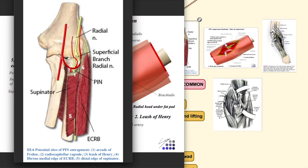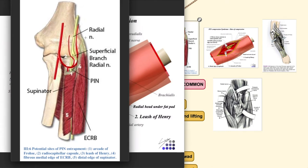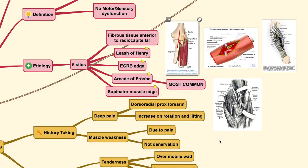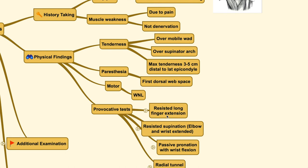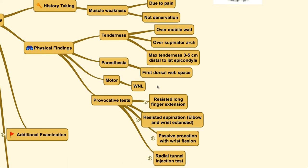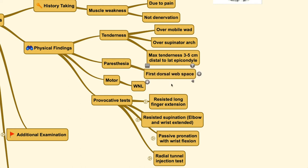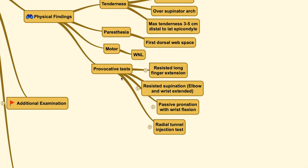This is the lateral epicondyle, and 3 to 5 cm from it, this area here will be known as the radial tunnel. In patients with suspected radial tunnel syndrome, you can elicit tenderness when you press around this area. The motoric function should be within normal limits. Paresthesia is only rarely found, and even if there is paresthesia, you will most likely find it in the first dorsal web space, although these are very rare.